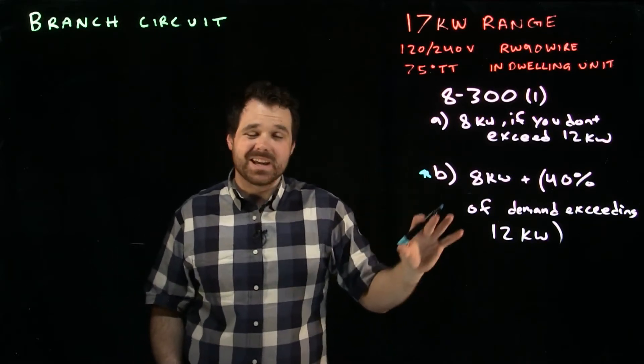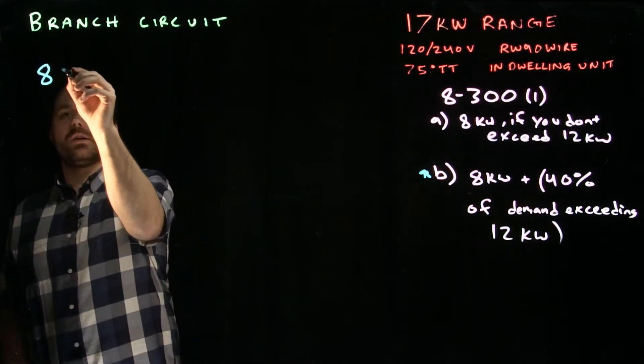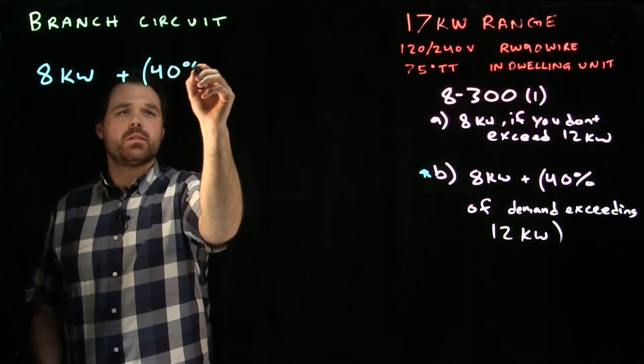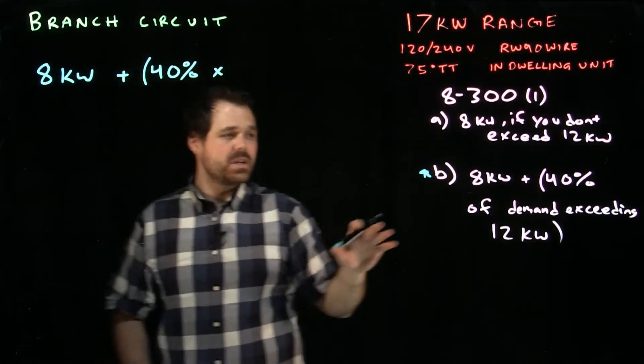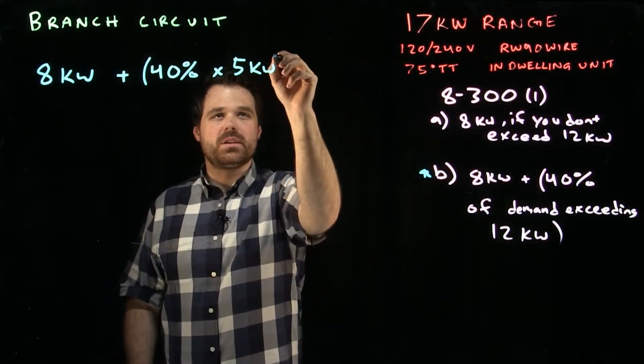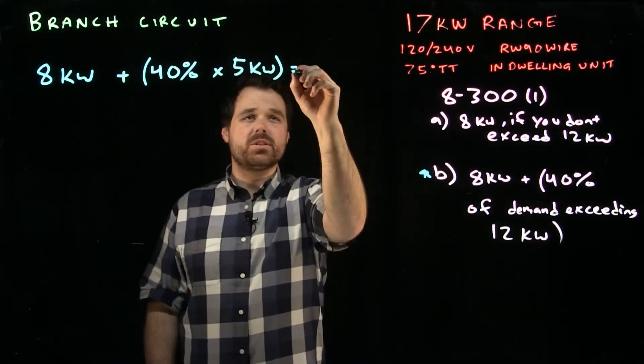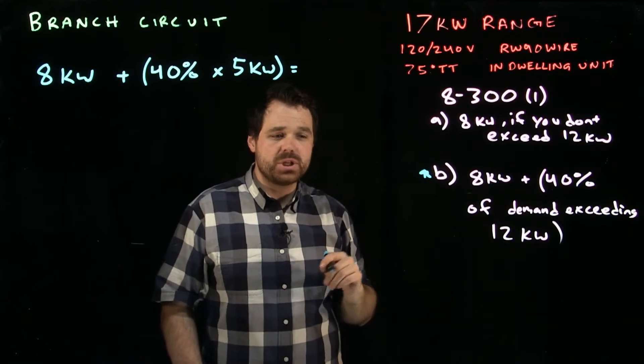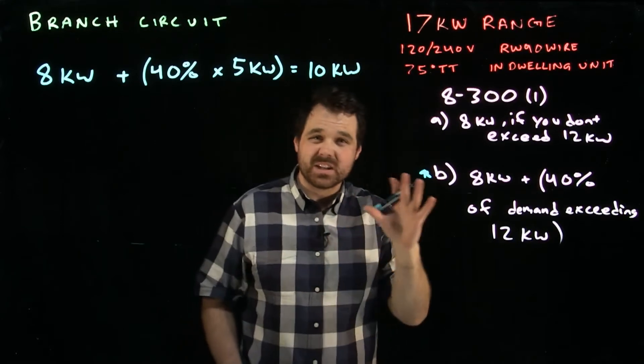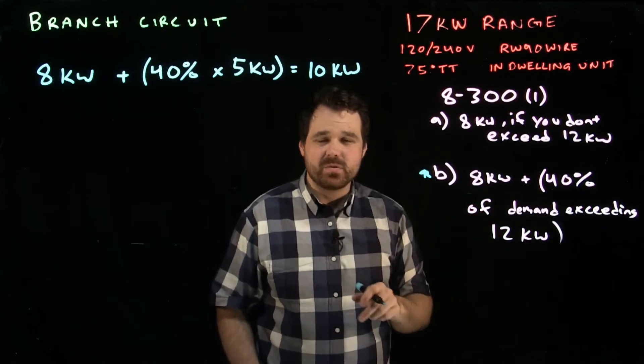So it tells us we're going to take 8 kilowatts plus 40% of everything exceeding 12. So we're going to go 8 kilowatts plus 40% times, in this case, we would have 5 kilowatts exceeding 12. Now this is going to give us our calculated demand of our range. In this case, we do the math and it works out to be 10 kilowatts. So 10 kilowatts is our calculated demand for this range. This is how much our wire is going to be able to have to provide to this range.